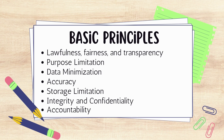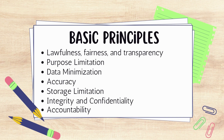The basic principles of data protection are: number one, lawfulness, fairness, and transparency; number two, purpose limitation; number three, data minimization; number four, accuracy; number five, storage limitation; number six, integrity and confidentiality (security); and finally, accountability.